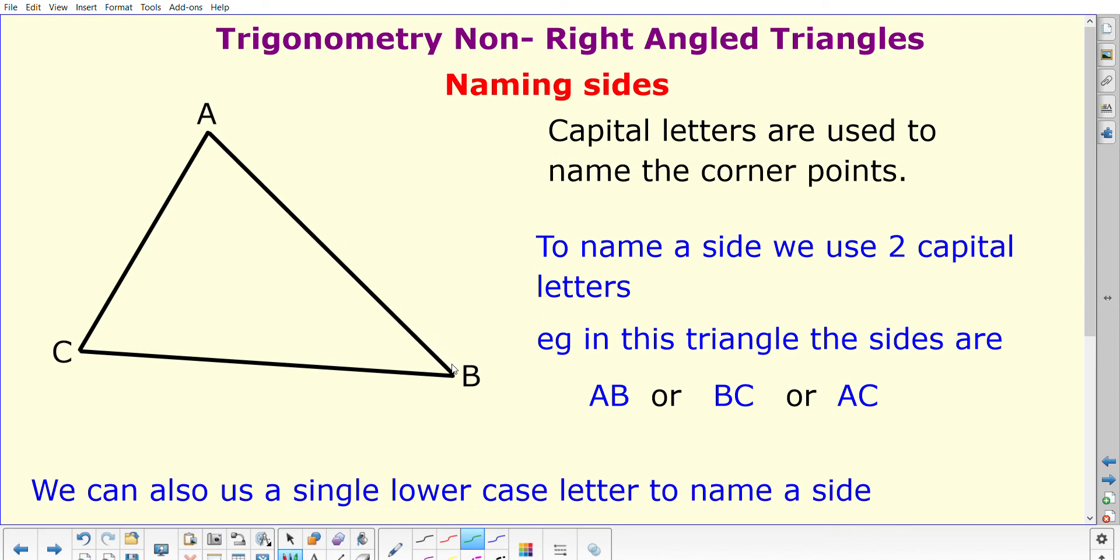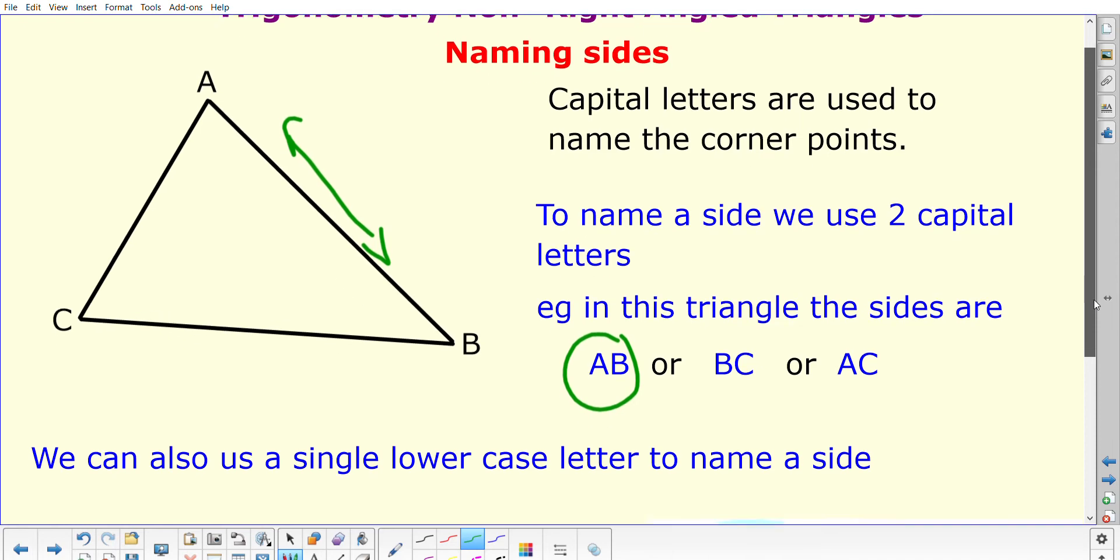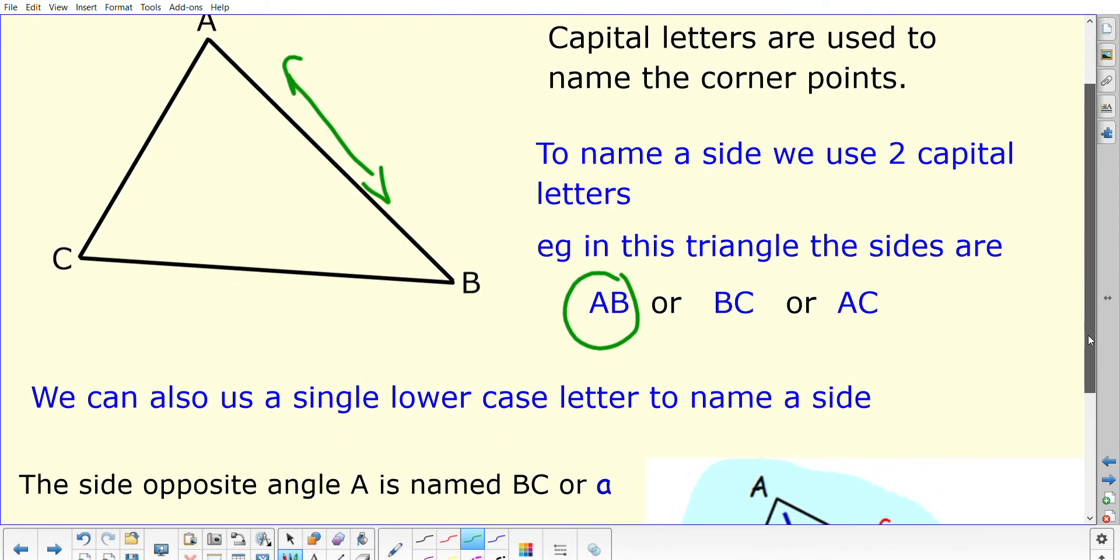This length here, for example, is AB, or we could say that's the same as BA—we could switch the letters round. There's no comma or anything between them, they're just grouped together so we know we're talking about this side. This is our side AB. Side BC is obviously this one here, and then side AC. That's one way to name your sides, using capital letters.